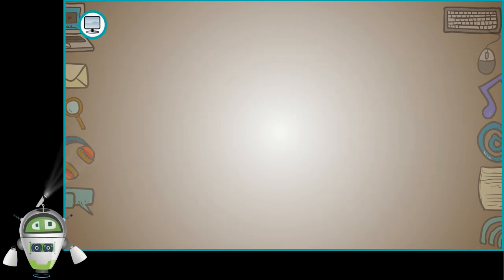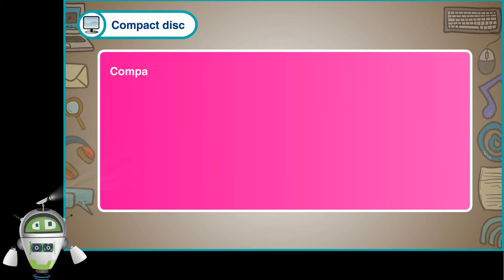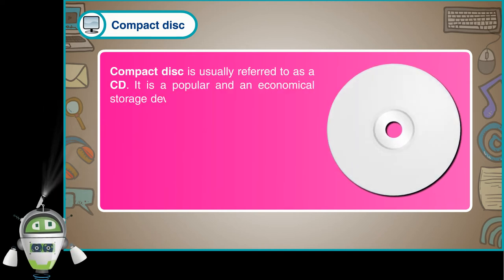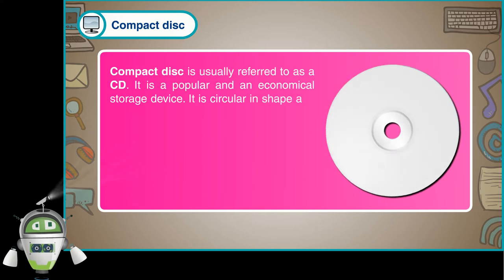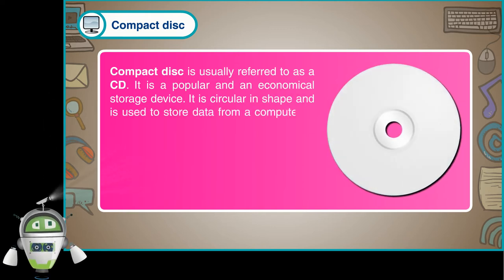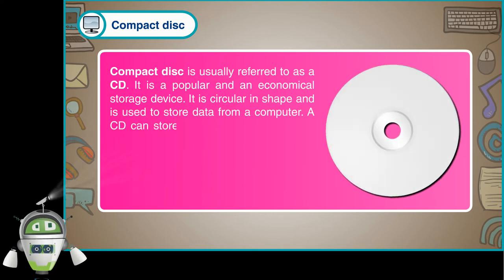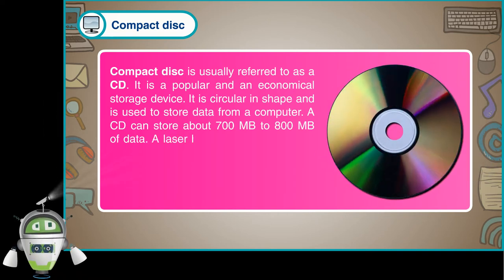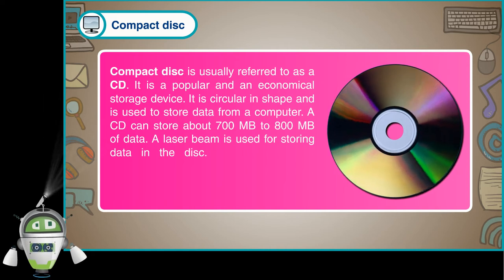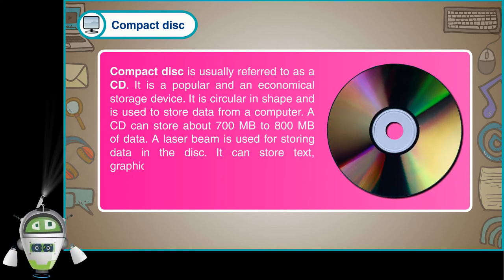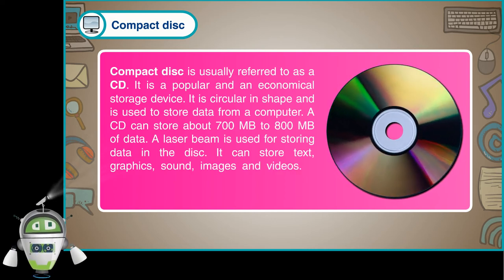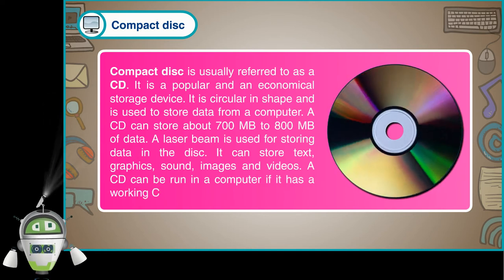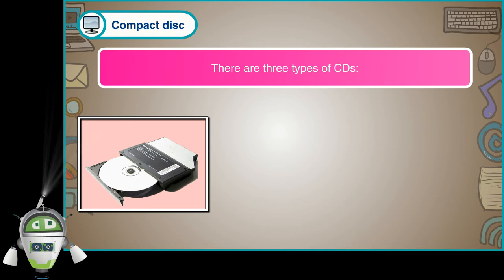Compact Disk is usually referred to as a CD. It is a popular and economical storage device. It is circular in shape and is used to store data from a computer. A CD can store about 700 MB to 800 MB of data. A laser beam is used for storing data on the disk, and it can store text, graphics, sound, images, and videos. A CD can be run in a computer if it has a working CD-ROM.